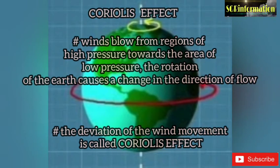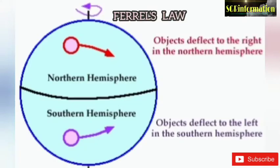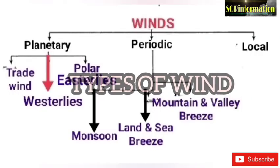Coriolis effect: winds blow from regions of high pressure towards the area of low pressure. The rotation of the earth causes a change in the direction of flow. The deviation of the wind movement is called the Coriolis effect. Due to the Coriolis effect — Ferrel's Law — winds in the northern hemisphere are deflected towards the right and the movement becomes clockwise, but in the southern hemisphere the deflection is to the left and winds move anti-clockwise. This type of deflected movement is known as Ferrel's Law.